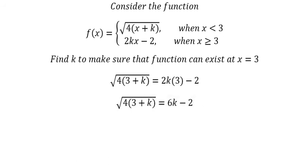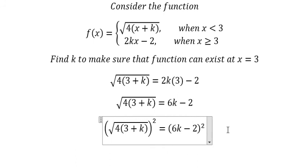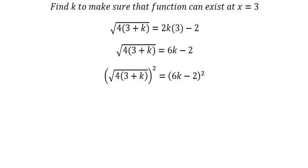Later we put the square on both sides. You get 36k squared minus 24k plus 4. This one you get 12 plus 4k.